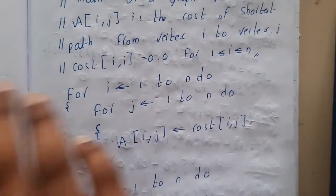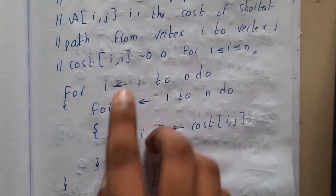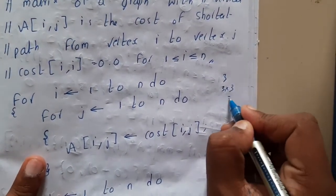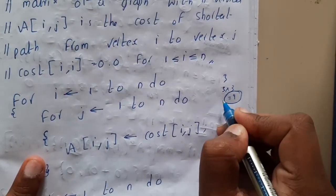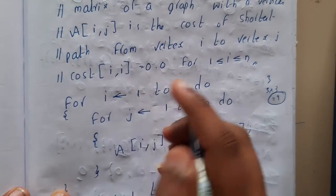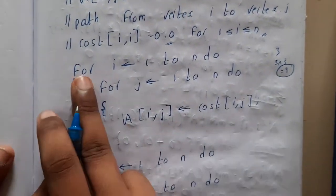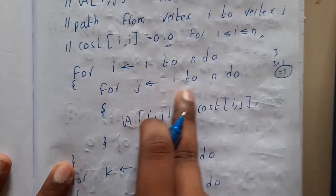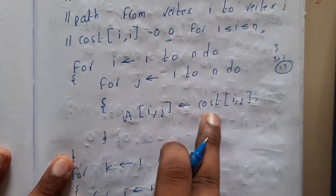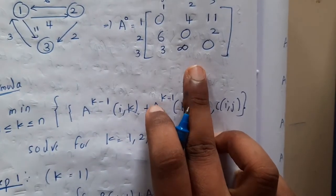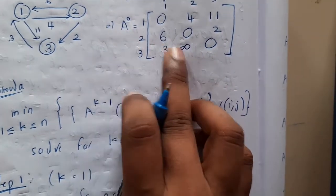A[i,j] stores the cost of the path from vertex i to j. The cost of A[i,i] is always equal to 0 — that is mandatory. So you can skip those terms. For a 3×3 matrix you can skip 9 steps, which I did. We already know A[i,i] = 0, so those are skipped for verification. The first step is: for i = 1 to n, for j = 1 to n, set A[i,j] = cost[i,j], initializing A with the cost matrix.